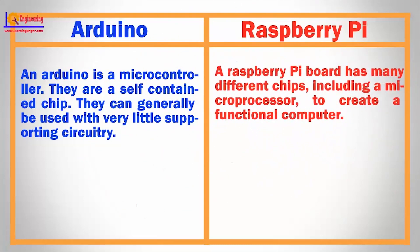A Raspberry Pi board has many different chips, including a microprocessor to create a functional computer.